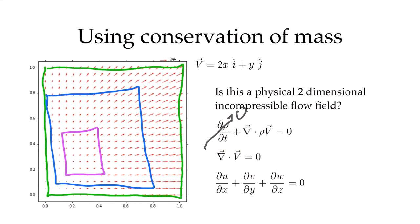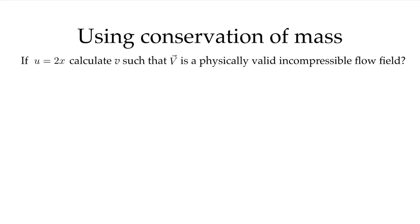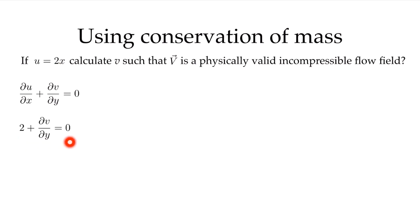If we write conservation of mass in Cartesian coordinates, we get ∂u/∂x + ∂v/∂y + ∂w/∂z = 0. For a two-dimensional flow the w term is zero, so we're left with ∂u/∂x + ∂v/∂y = 0. The previous velocity field was not valid, so let's show how, given one component, we can find the other. Starting with the continuity equation for a 2D incompressible case and substituting in u = 2x, the derivative of 2x with respect to x is simply 2, so the equation becomes 2 + ∂v/∂y = 0.